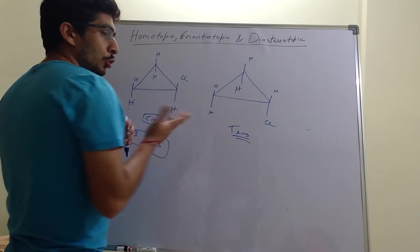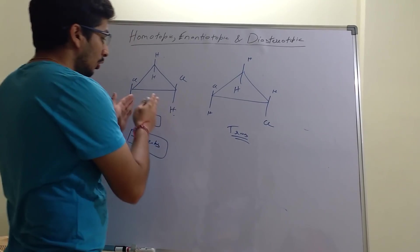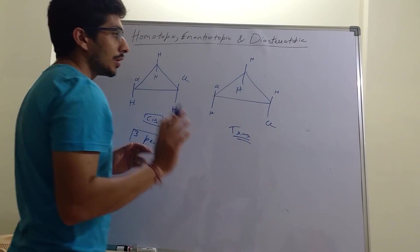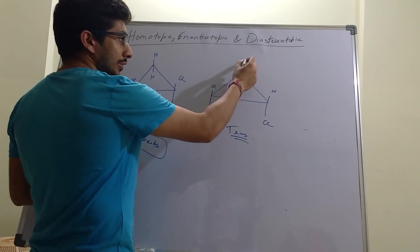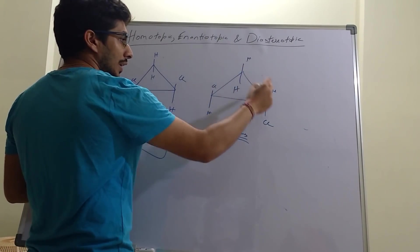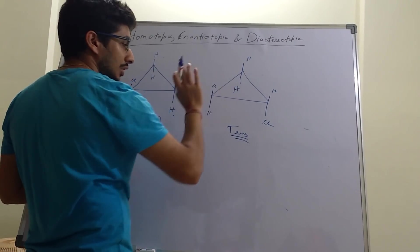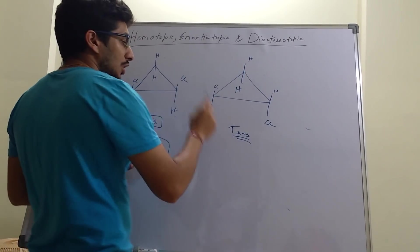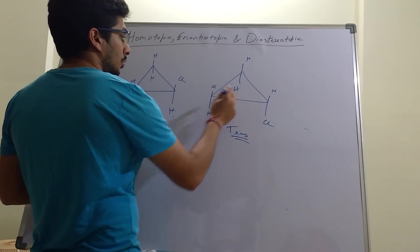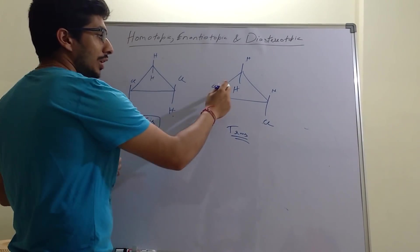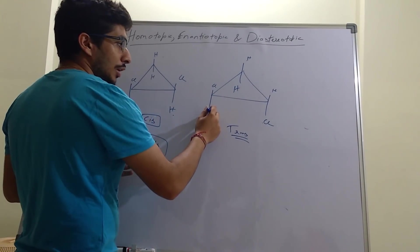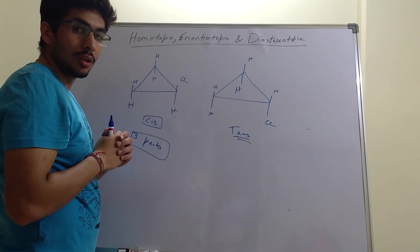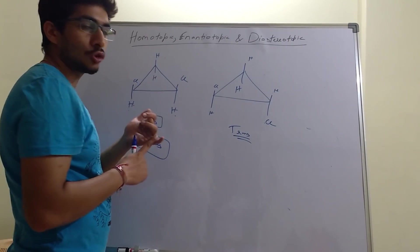For the trans isomer, I'll use a different approach — just looking at the environment directly. This hydrogen is cis with one chlorine, trans with the other chlorine, cis with one hydrogen, and trans with one hydrogen. The second hydrogen is also cis with one chlorine, trans with one chlorine, cis with one hydrogen, and trans with one hydrogen. Their environments are the same — they are not diastereotopic but rather enantiotopic or homotopic, giving only one signal.